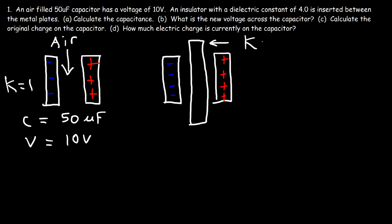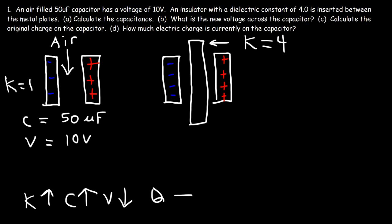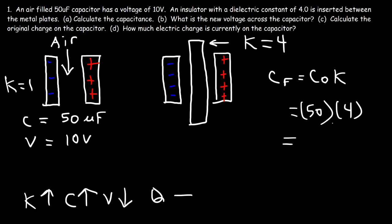The dielectric constant of this material is 4. Whenever you increase the K value, the capacitance increases proportionally and the voltage decreases, if the capacitor is not connected to a battery or some power source. If it's not connected to anything, the capacitance will go up, the voltage will go down, and the charge simply stays the same. To calculate the new capacitance — call it C_final — it equals the original capacitance multiplied by the dielectric constant. The original capacitance was 50 microfarads multiplied by 4, so the new capacitance is 200 microfarads — increased by a factor of 4.